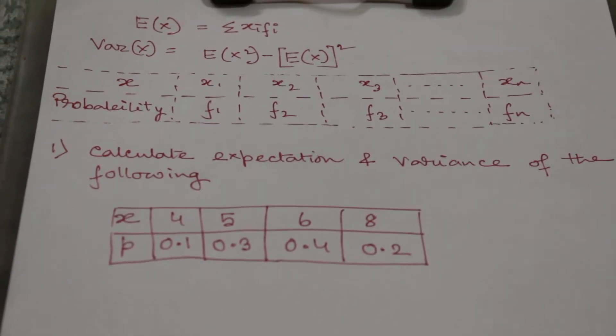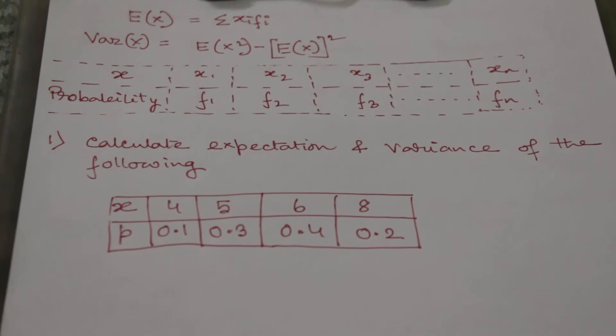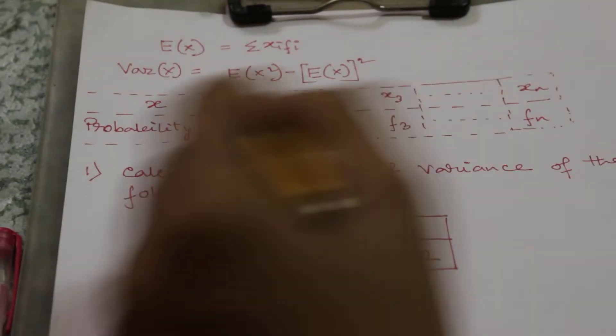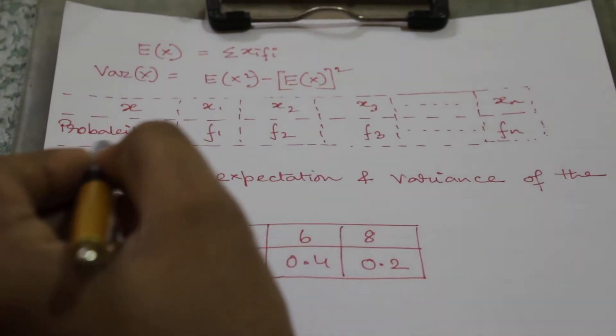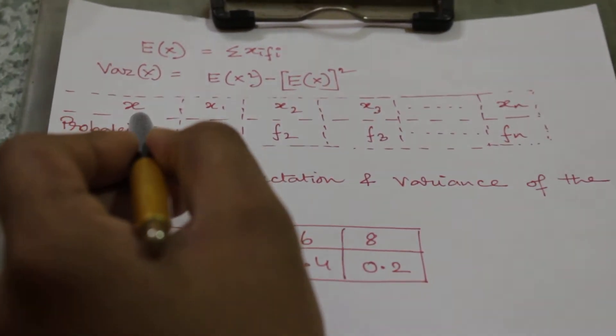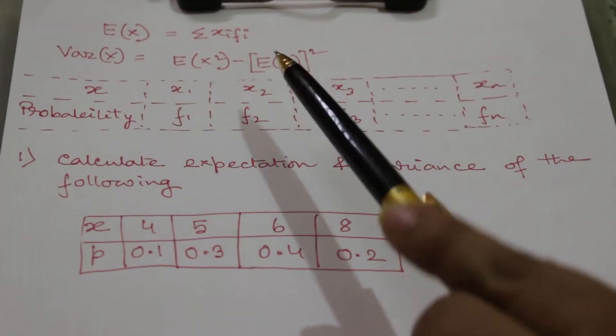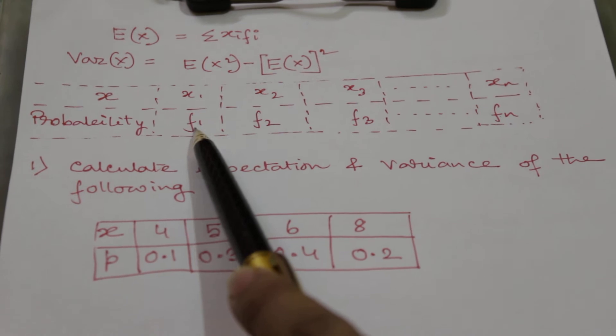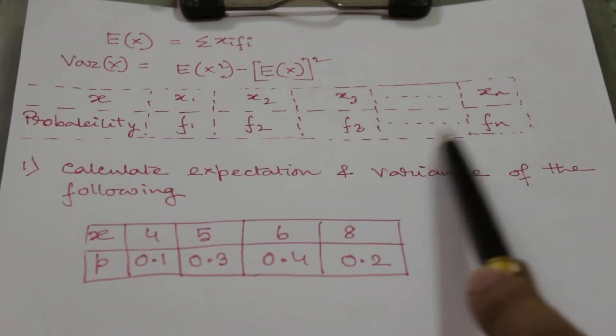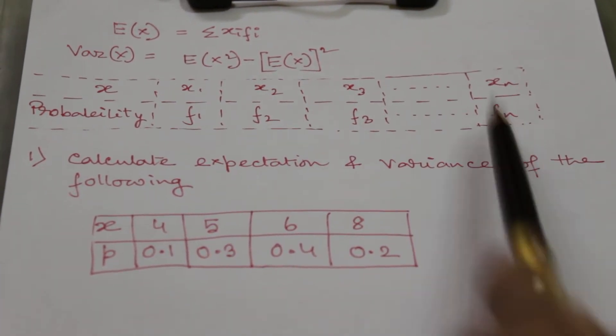So let's start. This is a random variable distribution. This is variable X and its corresponding probability. Variable X takes values as X1, X2, X3, dot dot Xn, and corresponding probabilities are f1, f2, f3, dot dot fn.